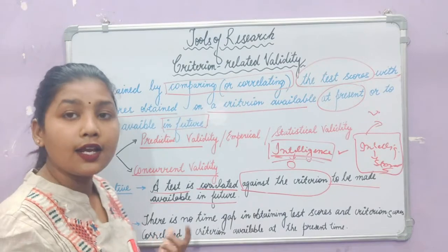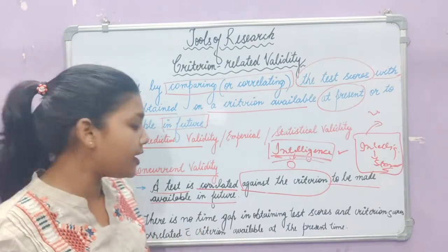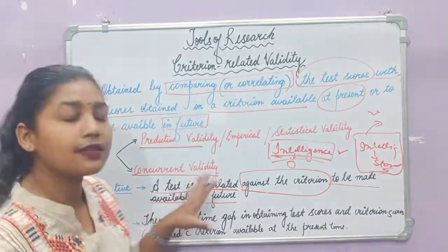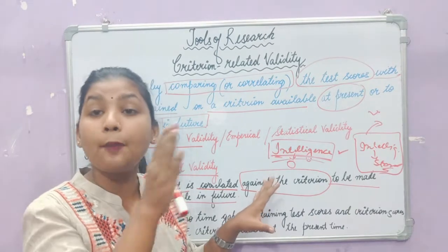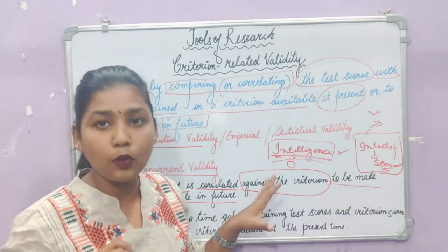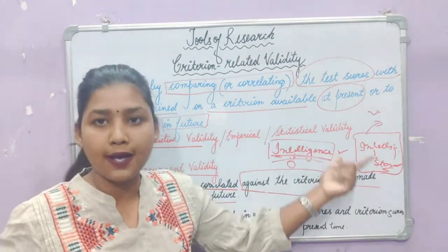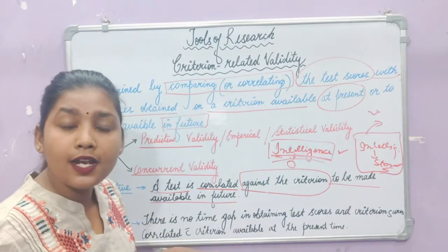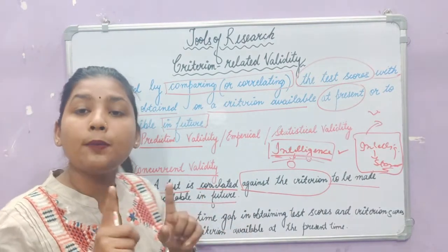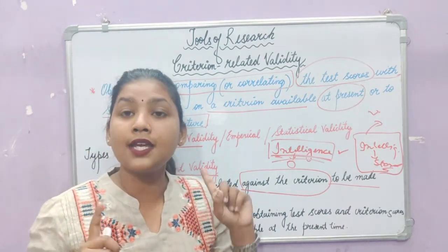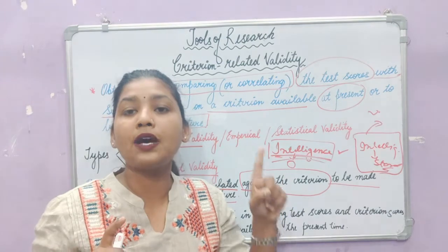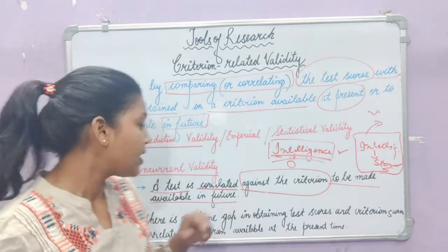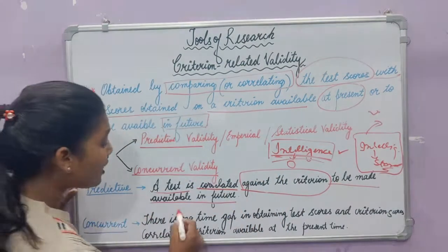Concurrent Validity: when we talk about predictive validity, there is a time gap because you are talking about the future. But in concurrent validity, there is no time gap. That is the key difference between predictive validity and concurrent validity.